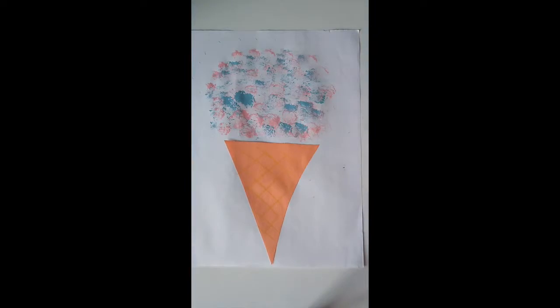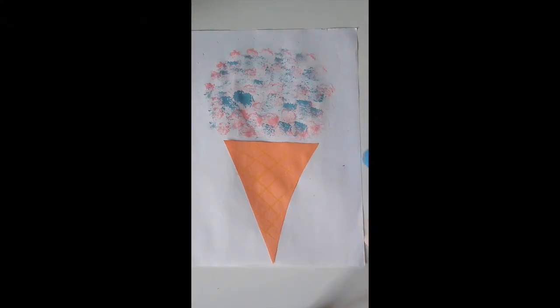And then we can also, when this dries a little, we can use a q-tip. And give it like little sprinkles of other colors. Just because, you know, it's a magical cotton candy. It doesn't have to be real. And it's just more fun to use more colors and more textures on it.